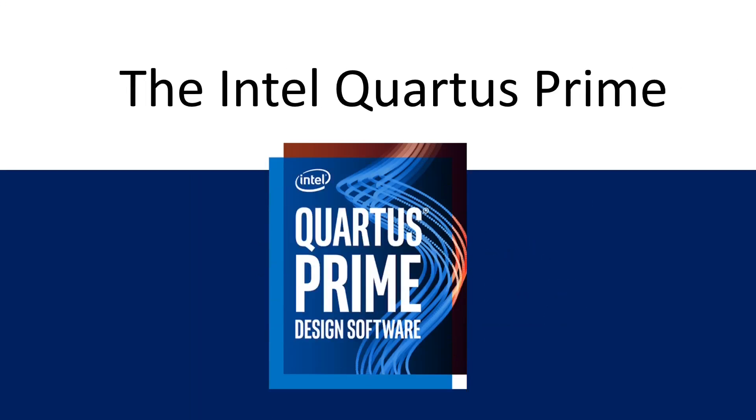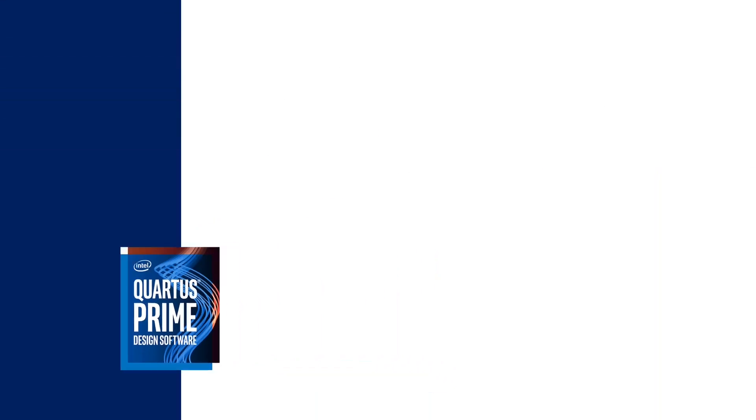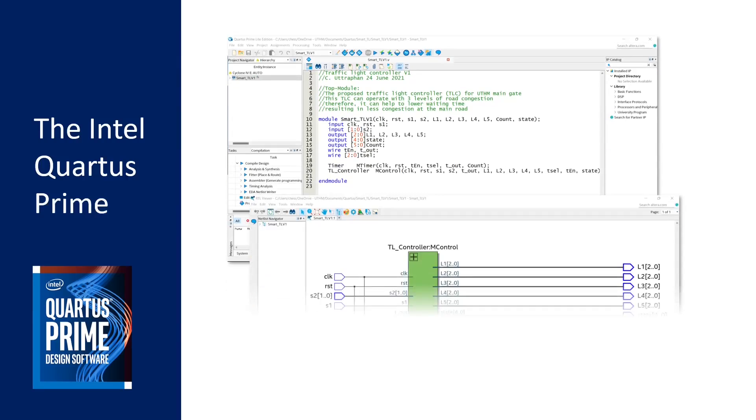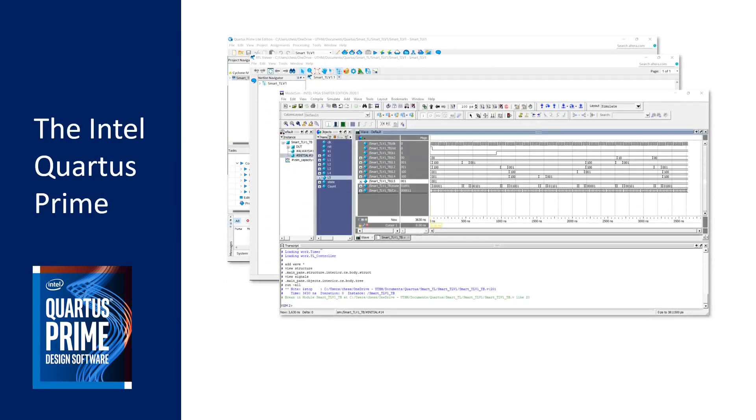Now we will look at the tools that we need to use in order to learn this course. We will use the design software which is the Intel Quartus Prime Light Edition, which is free for education use. The Quartus Prime is used to model the digital circuit using Verilog. We also need the Altera ModelSim that will be used for verification of the design.